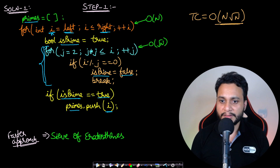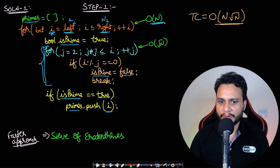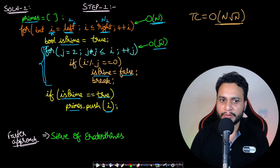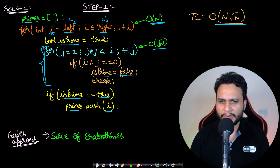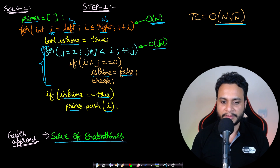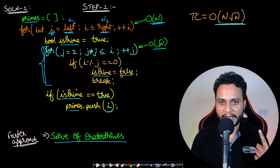With this naive approach, if left = 1 and right = N, the difference is approximately N, giving O(N) iterations with O(√N) per check, so total time is O(N√N). This is not very efficient. A better approach is using the Sieve of Eratosthenes — I have already made a detailed video on this, please click the 'i' button or check the link in the description.